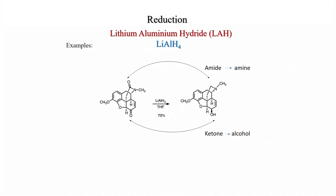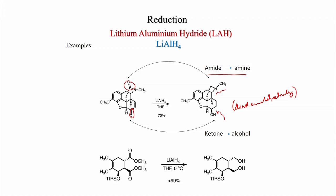LiAlH4 is used in many complex molecule syntheses. In a complex structure bearing both an enone motif and an amide motif, LiAlH4/THF reduces the amide to an amine selectively, and the ketone carbonyl is reduced to an alcohol diastereoselectively with hydride coming from the down face. In another example with a selenide group and two ester motifs, both esters are reduced with LiAlH4 to give a diol without disturbing the TIPS group.